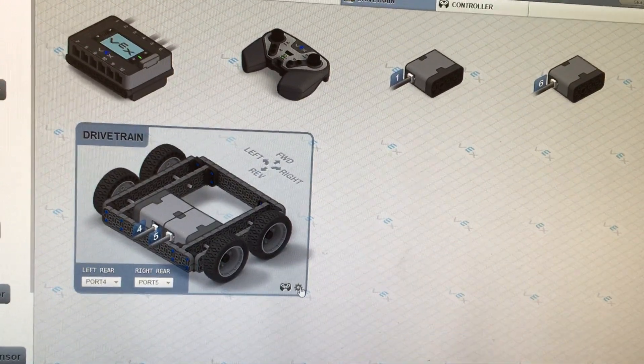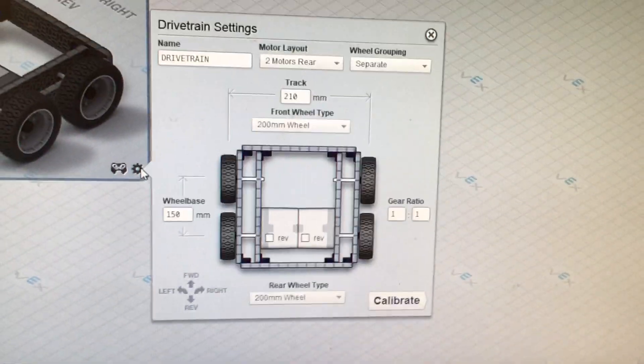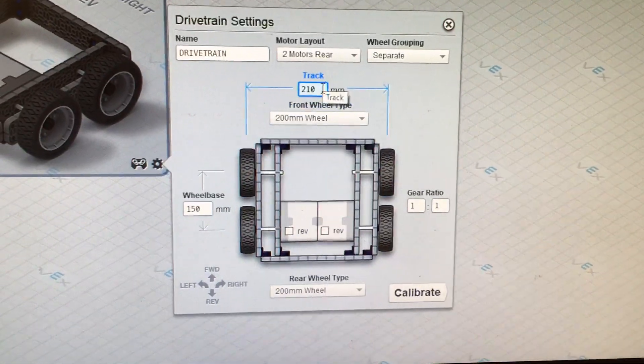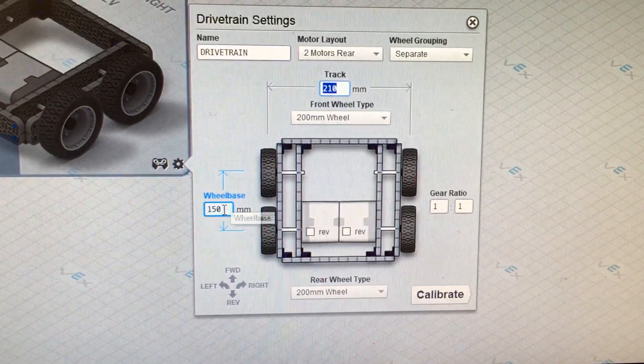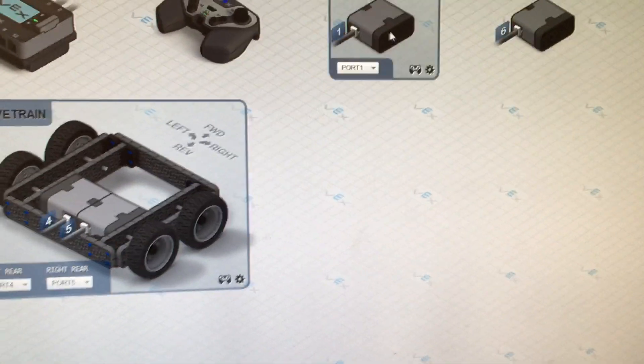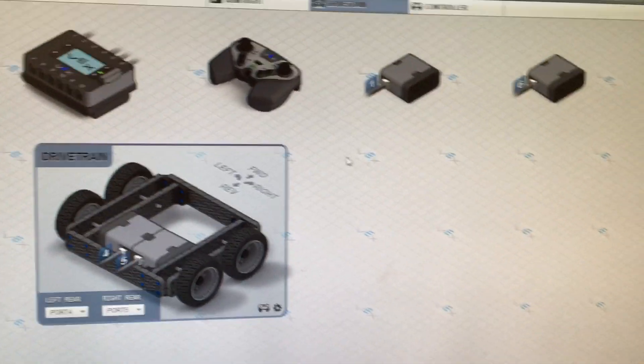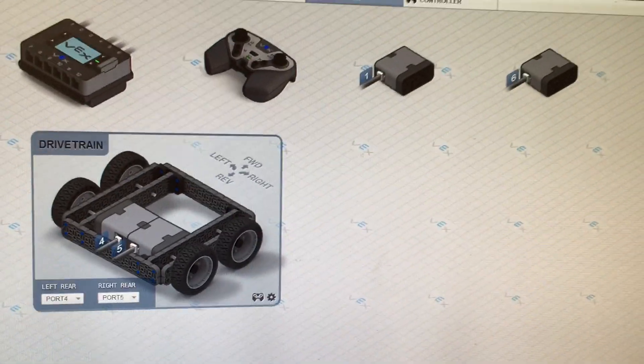You need to come into the drivetrain, and if you are not using the default drivetrain, you need to adjust your widths and your wheelbase. So basically, you need to get your robot controls in here and get it somewhat functional.